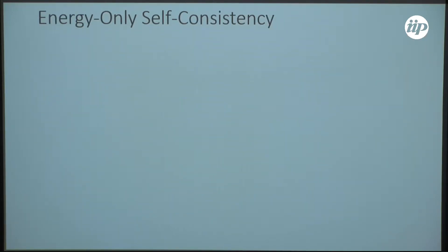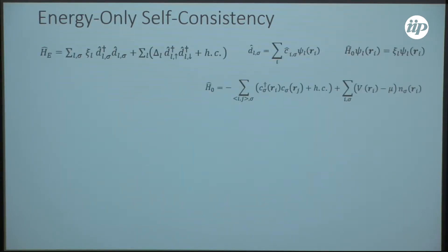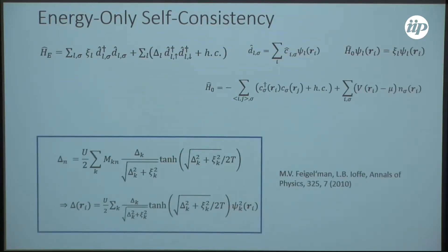I want to introduce another scheme to solve the self-consistency problem approximately, since solving these equations is not possible analytically. In analytical works on the superconductor-insulator transition, a reduced self-consistency scheme is sometimes used. We use this Hamiltonian where the operators are in the basis of H0 — the Anderson Hamiltonian with the disorder potential. We neglect the Hartree shift, change into this basis, and only keep the pairing between time-reversed states. This gives it the form of the BCS Hamiltonian, and we can write down the self-consistency equations instantly. This scheme is used, for example, by Feigelmann in his analytical treatment of the superconductor-insulator transition.